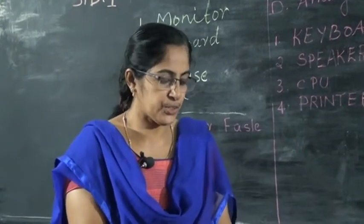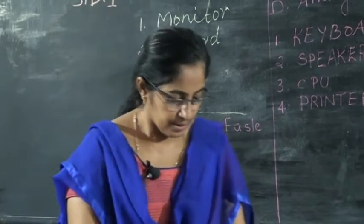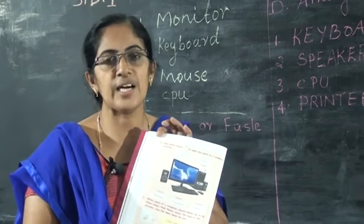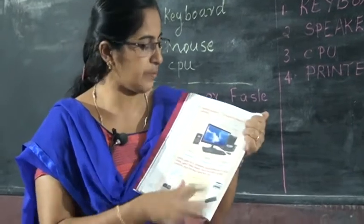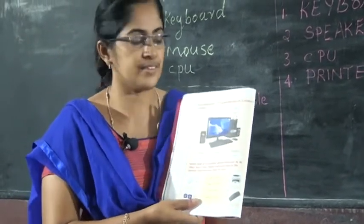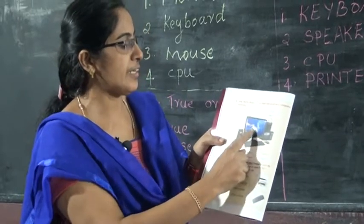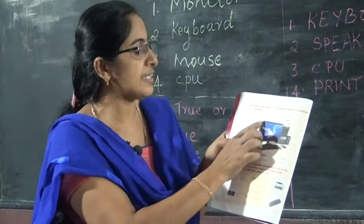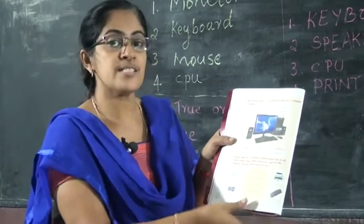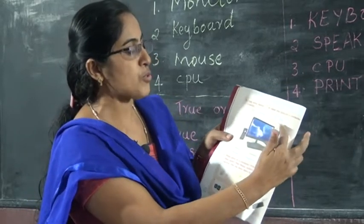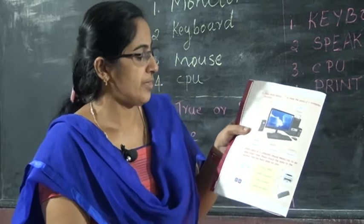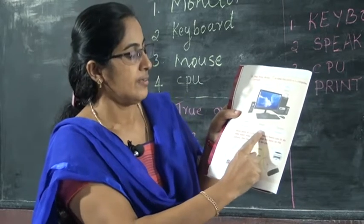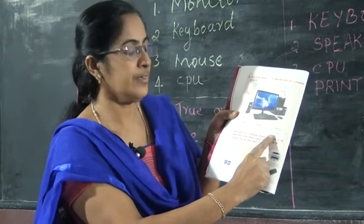Take page number 28. You can see the parts of the computer — check if the labels are correct or wrong. First one: the label says monitor, but the two parts shown are wrong. The correct one is monitor. This one is mouse — what is the answer? CPU. And this one is speakers. Speakers label is correct. Next: keyboard, and next: mouse.